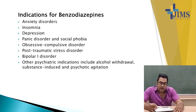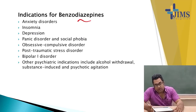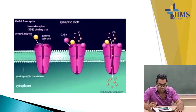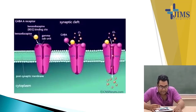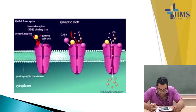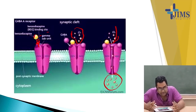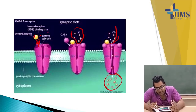Indications for benzodiazepines are anxiety disorders, insomnia, depression, panic attacks and social phobia, OCD, PTSD, bipolar 1 disorder, and other indications including alcohol withdrawal and substance-induced psychotic agitation. The mechanism involves the GABA receptor where benzodiazepine acts on the GABA subunit, increasing chloride ion influx, thereby increasing the level of GABA and internal chloride levels producing anxiolysis.